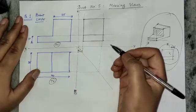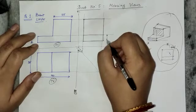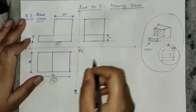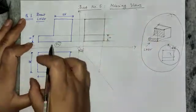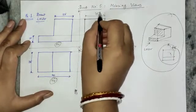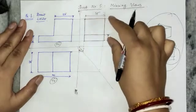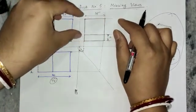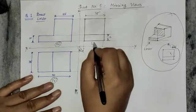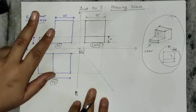Don't forget to put the dimensions. As this side is 10, this also has to be 10. This height is 25, so this width is also 25. This dimension is not given in the question directly, but don't worry — you have already established it by drawing the projection lines. So this is your required left hand side view; mention it clearly.